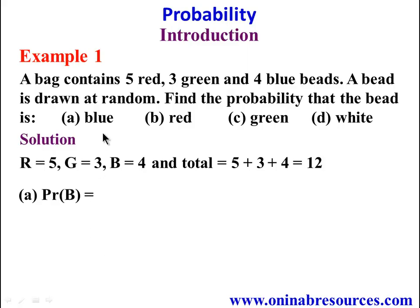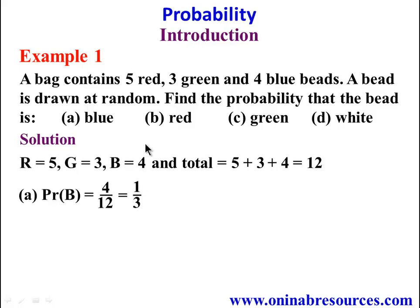Starting from A, the probability of picking a blue bead: how many blue beads do we have? 4, over the total number of beads, which is 12. So P(blue) = 4/12, and in the simplest form, that is 1/3. For B, the probability of picking a red bead: we have 5 red beads over 12 total, and this is already in the simplest form.